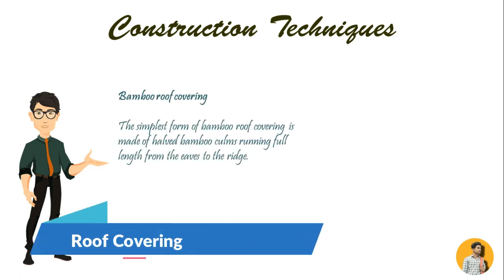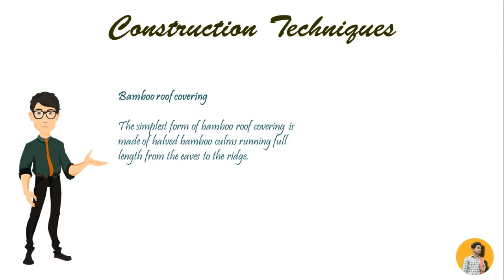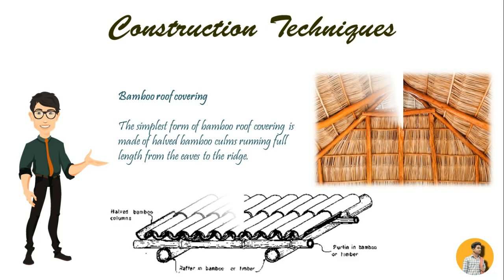Bamboo roof covering: The simplest form of bamboo roof covering is made of half bamboo canes running full length from the ridge. Large diameter canes are split into two halves and the cross-section nodes removed. The first layer of canes is laid side by side with the concave face upward. The second is placed over the first with the convex face upward. In this way bamboo overlaps as in a tile roof and can be made completely watertight.